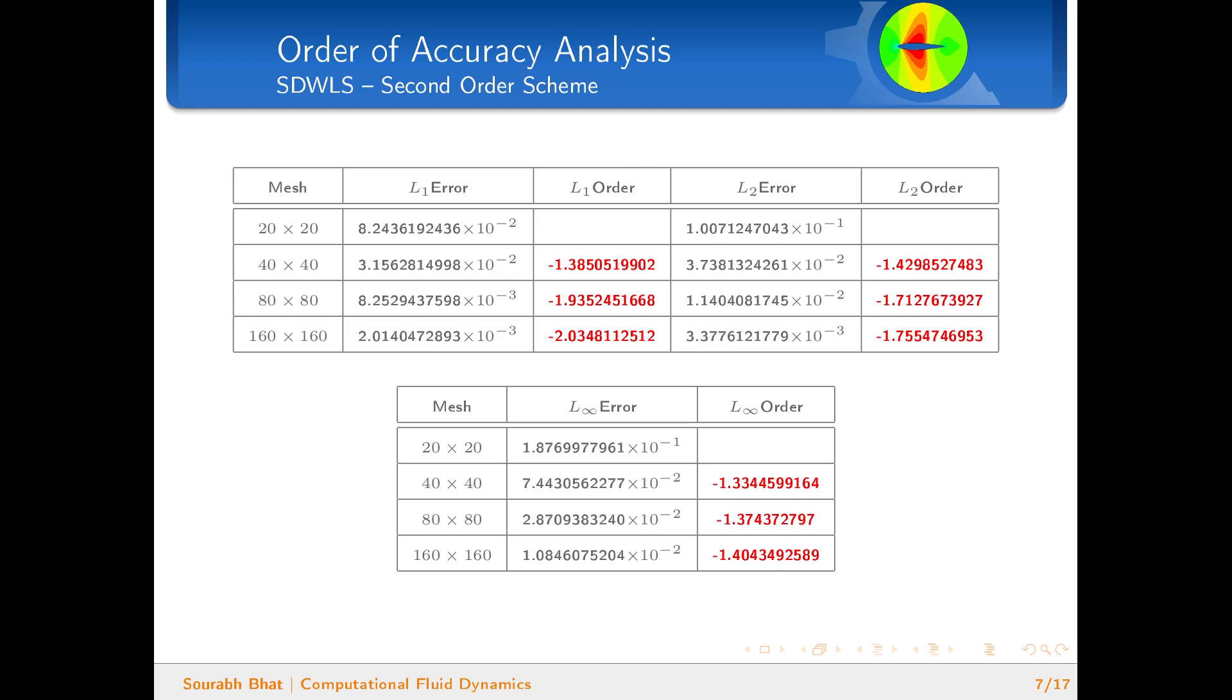The fifth order WENO scheme—since it's fifth order we are expecting to get an order of accuracy of five, and we do get an order of accuracy of five as expected.